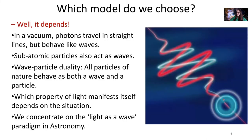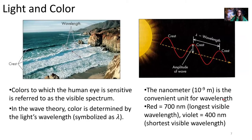Which model do we choose — the wave model or the particle model? It all depends on the situation. In a vacuum, photons travel in straight lines but also behave like waves. Subatomic particles can also act like waves. This wave-particle duality means all particles of nature, even electrons, can behave as both a wave and a particle. In this astronomy class, we tend to concentrate on the wave paradigm.